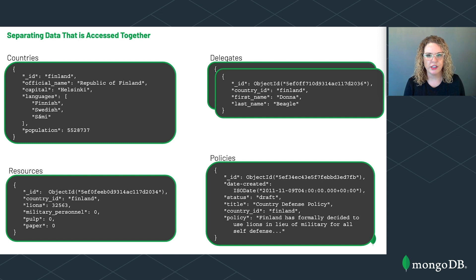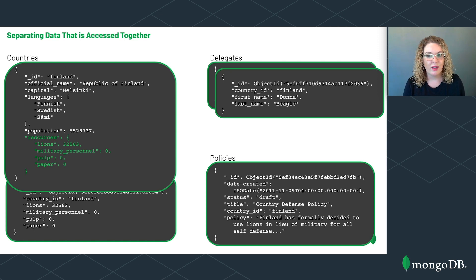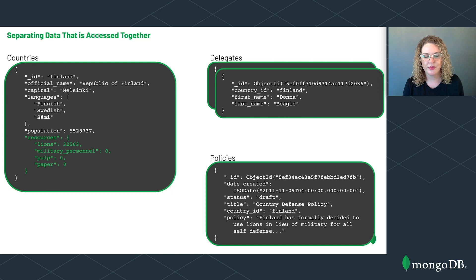Let's start with the first two collections: countries and resources. There is a one-to-one relationship between documents in the countries collection and the resources collection. We can embed the information from a resource document as a sub-document in a country document. We've kept the information about resources together as a sub-document in the document for Finland. We have no need for the resources collection anymore, so we can delete it. At this point, Leslie can retrieve information about a country and its resources without having to use $lookup.